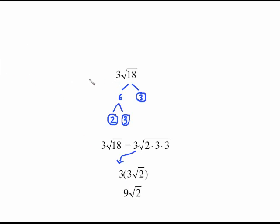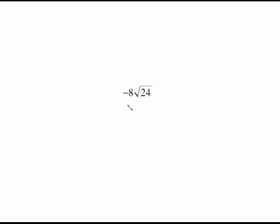The coefficient in front doesn't really make it any harder — you just have to remember to drag it along as you work with your square root. Let's do another one: negative 8 times the square root of 24.